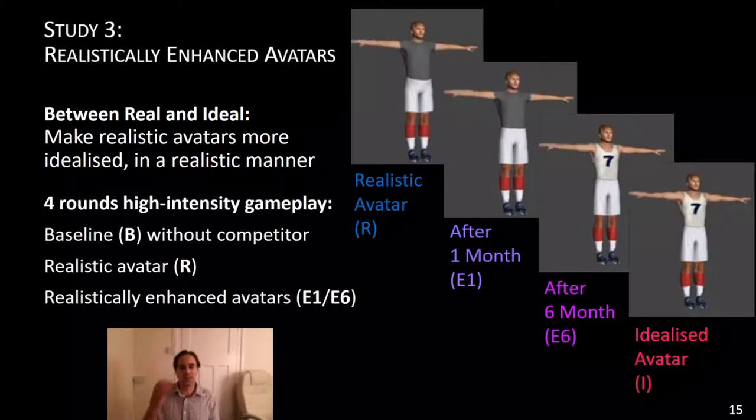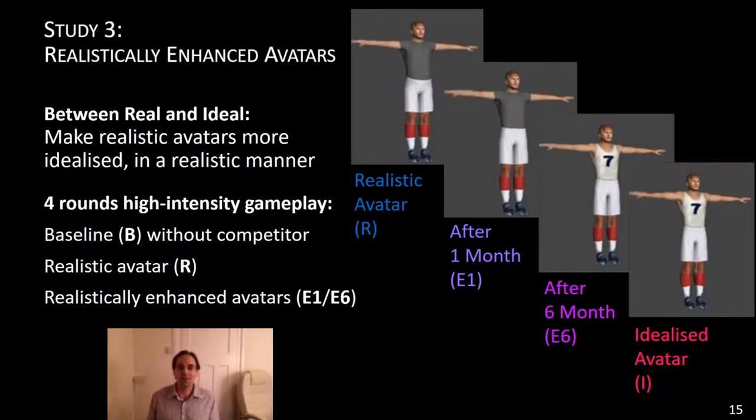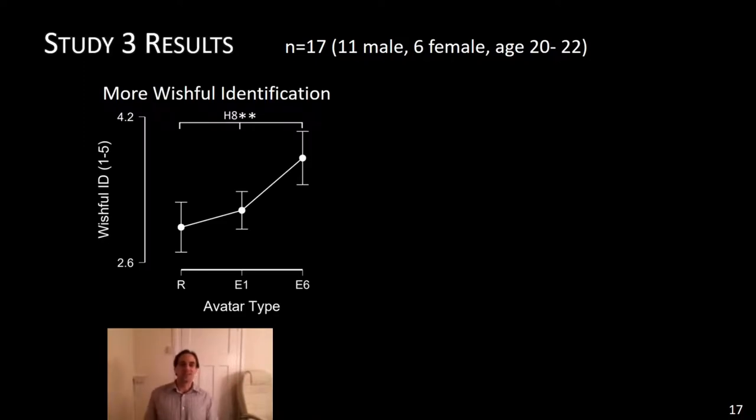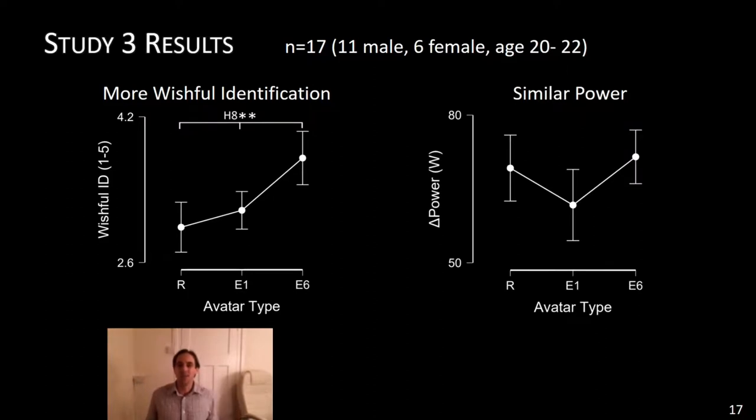We let players play the game for four rounds. The baseline round with the realistic avatar and we had two enhanced avatars, one month enhanced E1 and six months enhanced E6. Let's have a look at wishful identification first. Indeed, there's a significant trend here. There's more wishful identification for your E1 avatar and even more wishful identification for your E6 avatar after six months of rigorous training and diet.